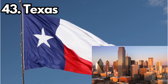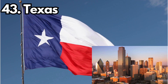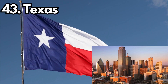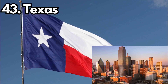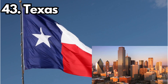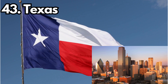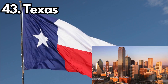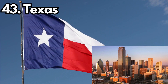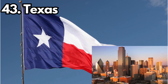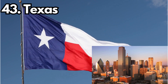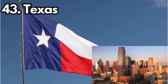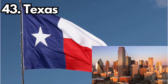43. Texas. Design: The Texas state flag consists of a vertical blue stripe on the hoist side with a white star, and horizontal stripes of white and red. Meaning: The blue stripe represents loyalty, the white represents purity, the red represents bravery, and the lone star symbolizes unity. History: The flag's design is inspired by the flag carried by Texas troops during the Texas Revolution, and was officially adopted in 1839.